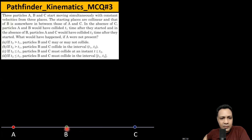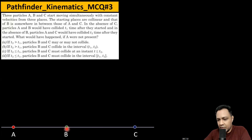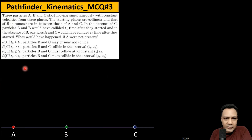They can move in any direction — not necessarily along the line A-B-C — they can move in any direction in this plane. The next information says that in the absence of C, A and B would have collided t1 time after they started.